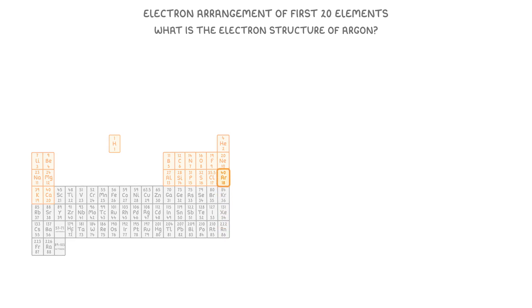For this, we first need to find argon on the periodic table. And we can see that argon has an atomic number of 18, so it must also have 18 electrons.